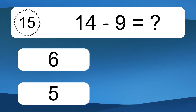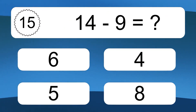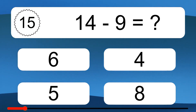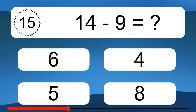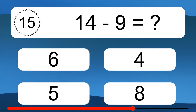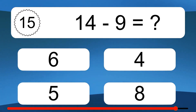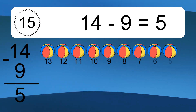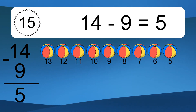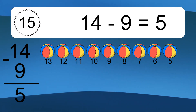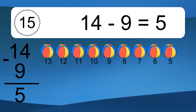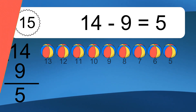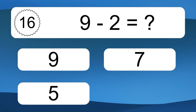14 minus 9 equals what? 14 minus 9 equals 5. Let's count it: 13, 12, 11, 10, 9, 8, 7, 6, 5.